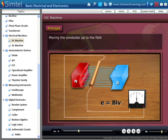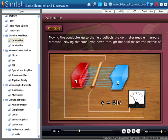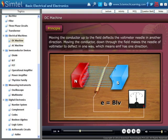Moving the conductor up through the field deflects the voltmeter needle in another direction. Moving the conductor down through the field makes the needle of voltmeter deflect in one way, which means EMF has one direction.